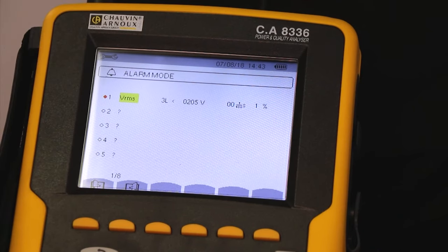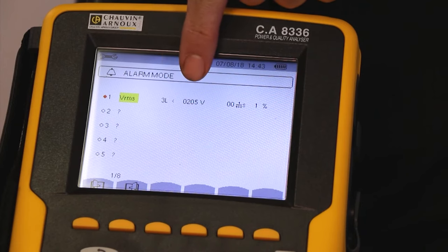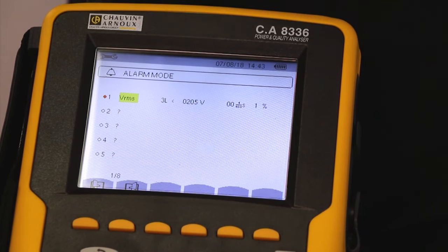At the top of page 1, I can select whatever voltage, current, etc. I want the alarms to be applied to. For example, either volts RMS or amps RMS. I can also set up alarms of frequency. Now I'm going to leave this set to all three voltage phases. And I'll set an alarm to trigger if any of those voltages drops to less than 205 volts.